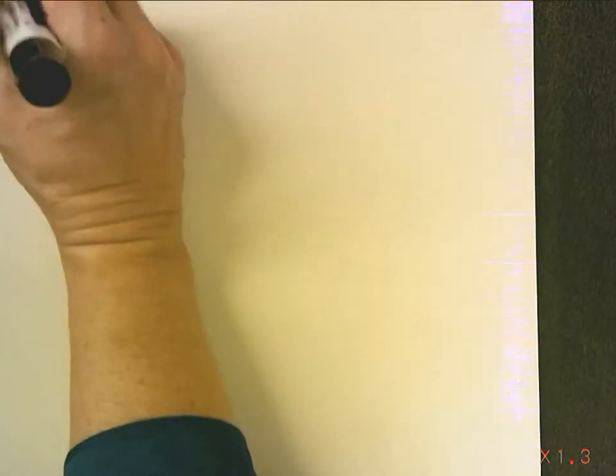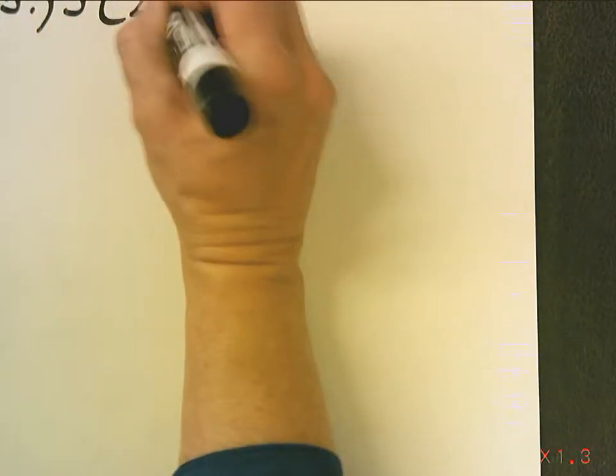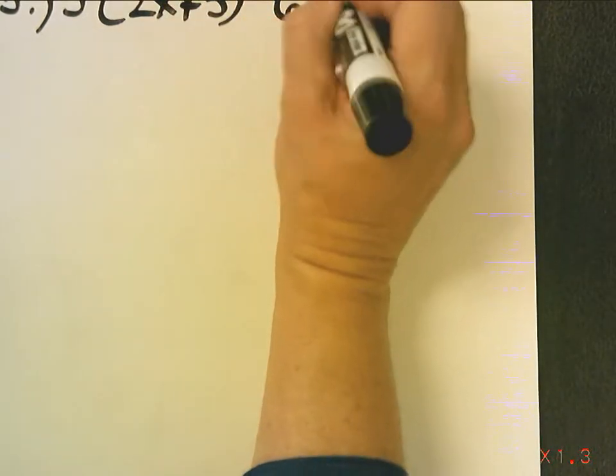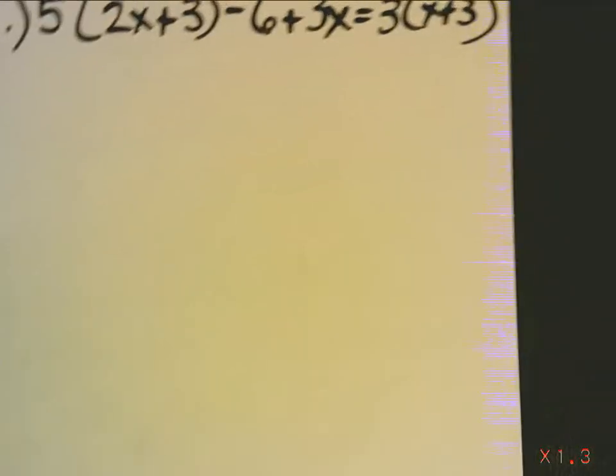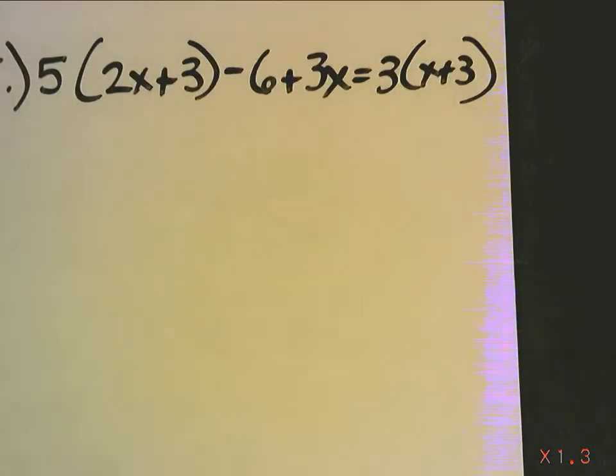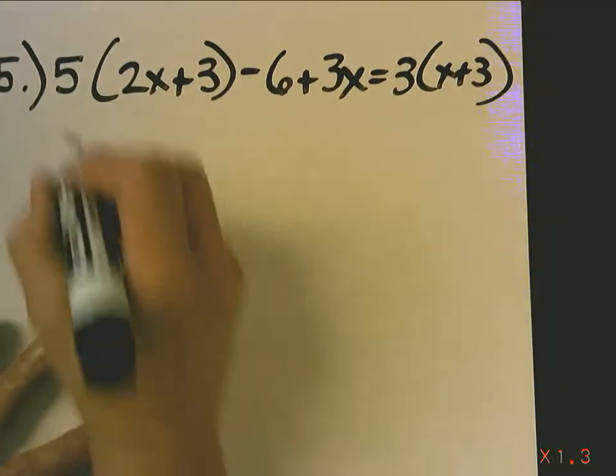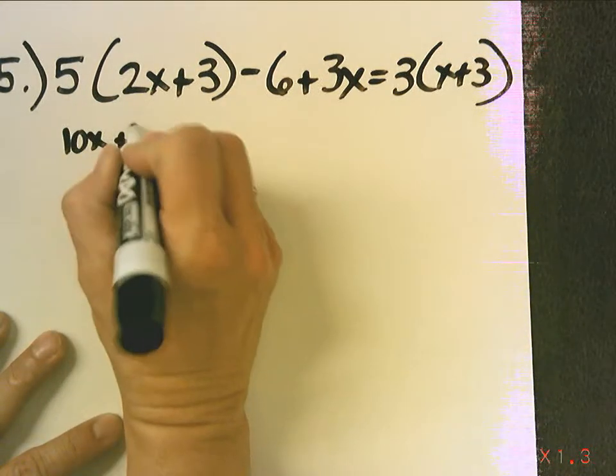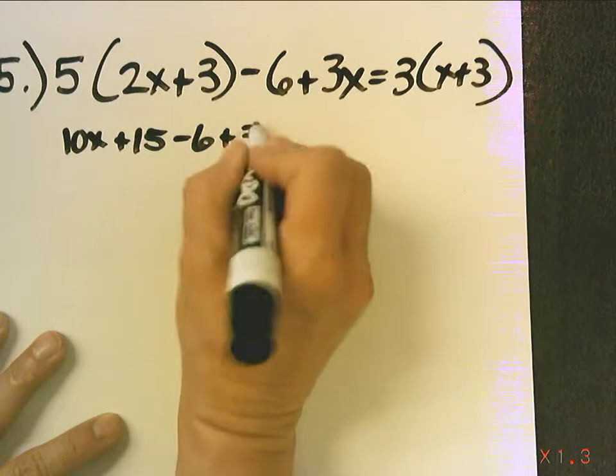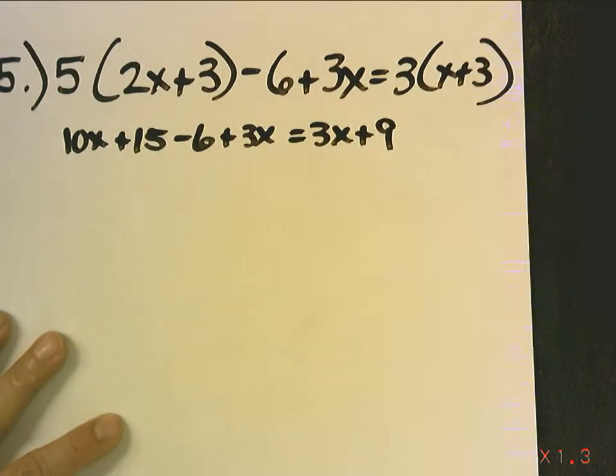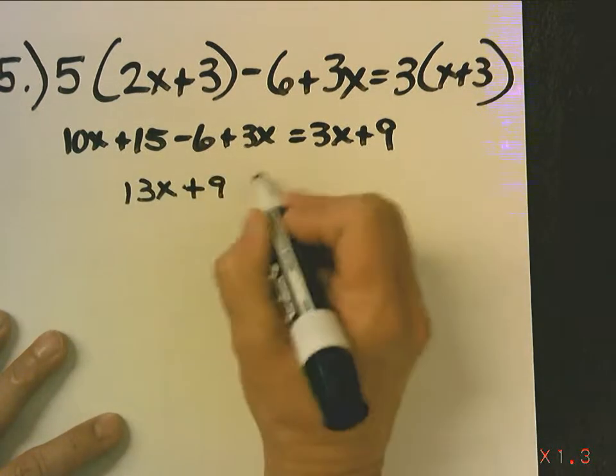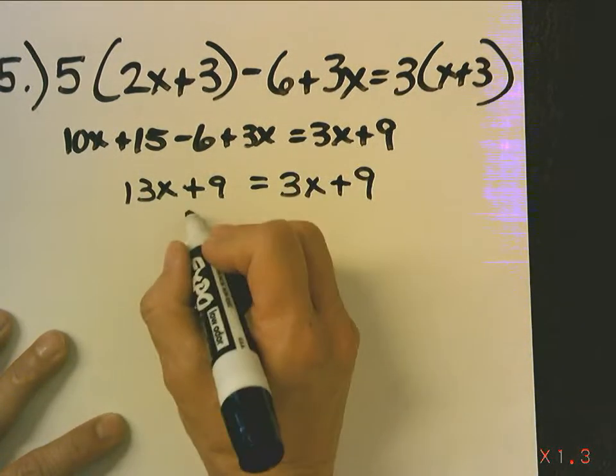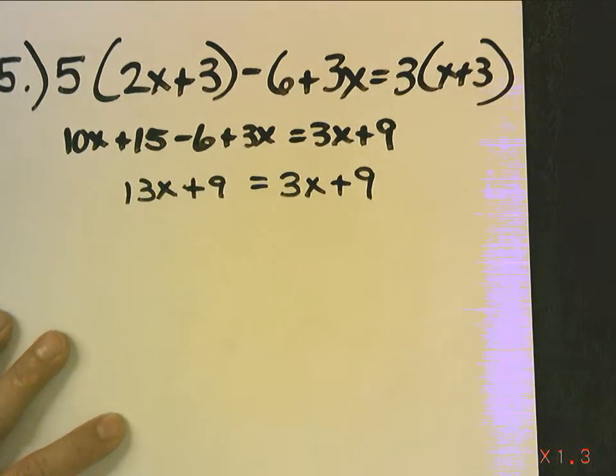And it is number 5. So, let's do number 5 together. 5 times 2x plus 3 minus 6 plus 3x equals 3 times x plus 3. Now I'm going to distribute. I get 10x plus 15 minus 6 plus 3x equals 3x plus 9. Now, I'm going to combine my like terms. 13x plus 9 equals 3x plus 9.